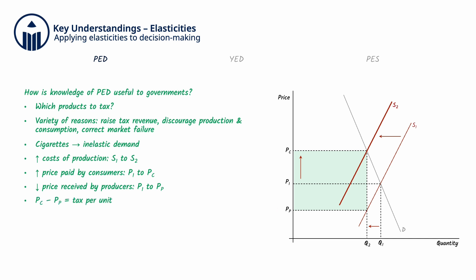The difference between Pc and Pp is the tax per unit, and the green rectangle is the amount of government tax revenue collected. Production and consumption also decrease from Q1 to Q2.